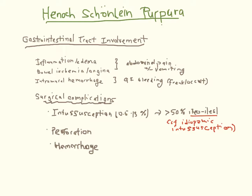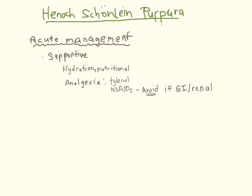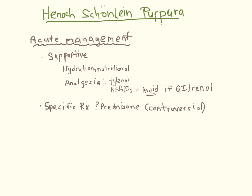Treatment is mainly supportive. NSAIDs can be used for arthritis, but should be avoided when there is GI or renal involvement. Corticosteroid use is controversial but is generally not recommended, as it may reduce abdominal and joint pain but does not prevent GI or renal complications.